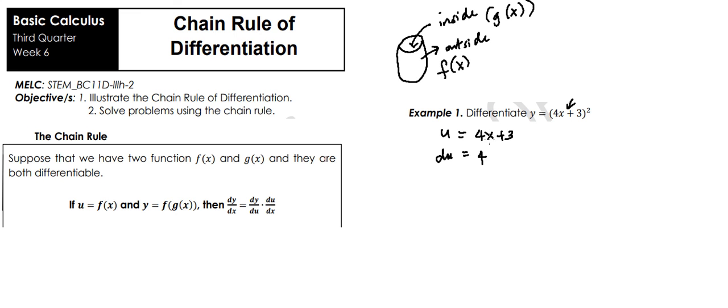Because this x means just 1, so 4 times 1 is 4. And then the 3 is a constant, so that's 0. That means we have 4. That's why I said, make sure you've mastered the basic rules first.